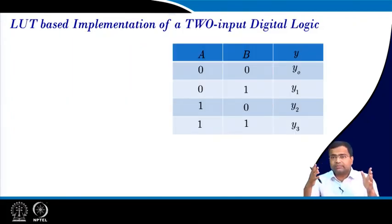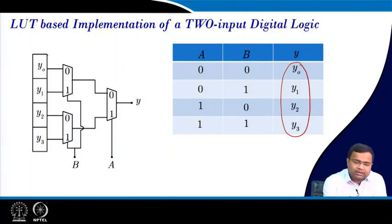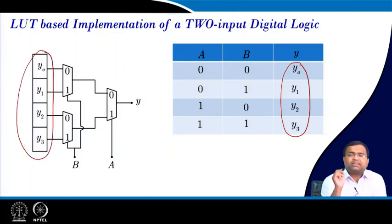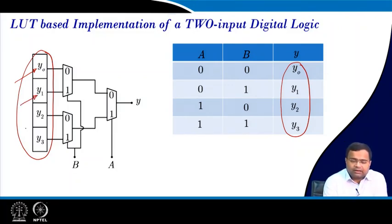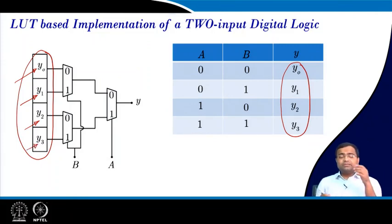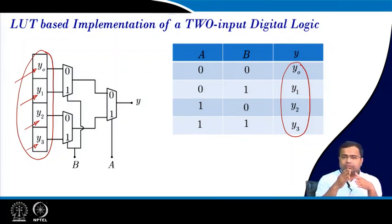The question is: can we make a flexible hardware which can be used to realize any of these 16 functions? We write the truth table, and all four binary digits — the bits — have to be mapped here. The value of y0 can simply be stored here, and this is an SRAM cell — static RAM. Each block can store either 0 or 1, so y0, y1, y2, y3 can each be 0 or 1.